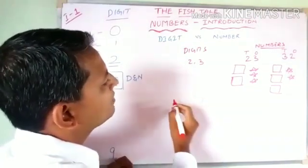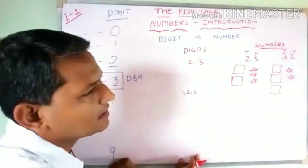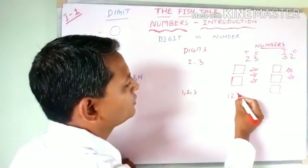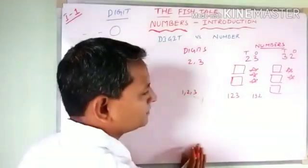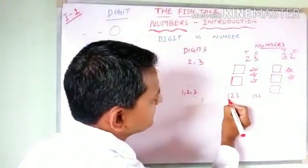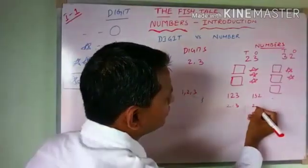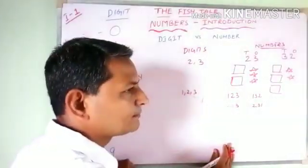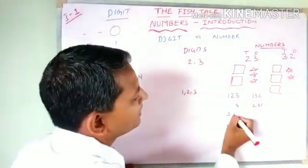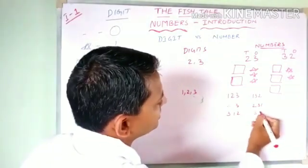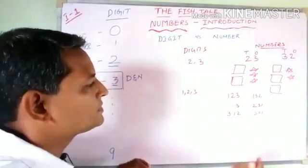Now if three digits are given, how many numbers can be made using them? First: 123. Keeping 1 fixed, change the others: 132. Keep 2 fixed: 213. Interchange: 231. Keep 3 in hundreds place: 312. Interchange the remaining: 321. This is how we can write all numbers using the given digits.